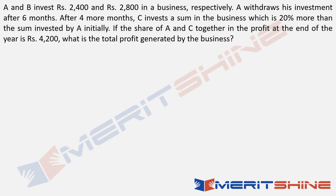Here's the first question on screen now. Please pause the video, read this question carefully and get to the answer. Restart the video only after you've got the answer. It's a partnership question: A and B invest rupees this much and this much in a business respectively. The moment you look at a partnership question, what should come to mind immediately? The ratio. So this is 24 to 28, which is nothing but 6 to 7.